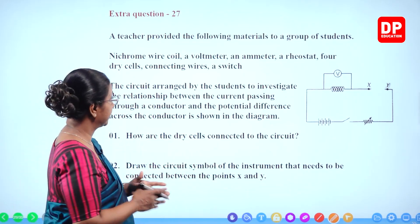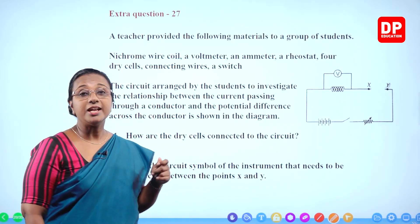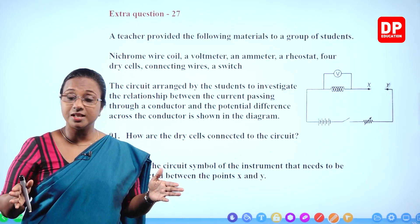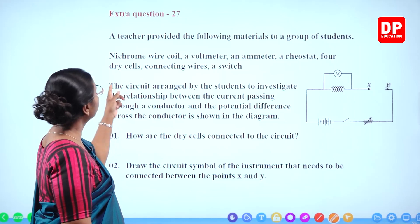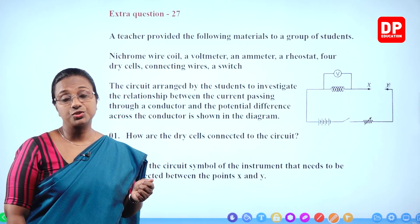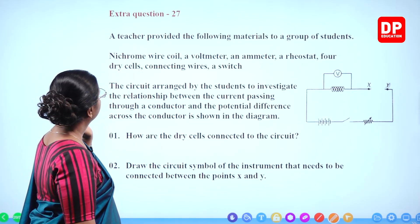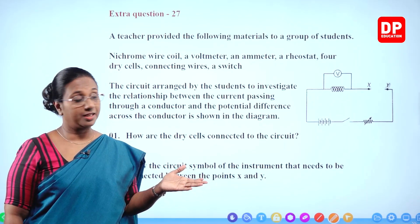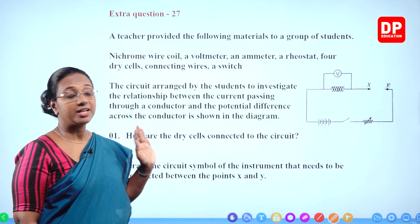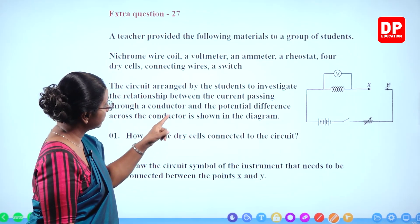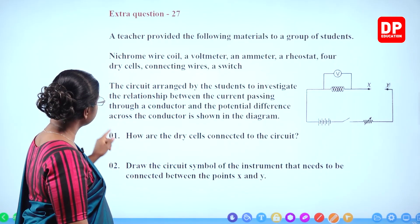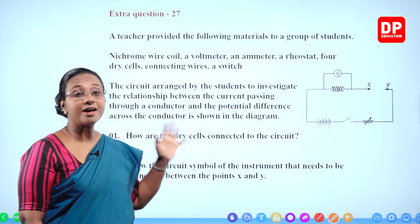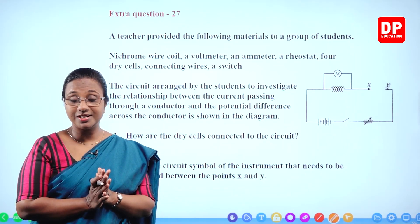The materials also include a voltmeter to measure the potential difference between two points, an ammeter to measure current, a rheostat which is a variable resistor (we can change the resistance during the activity), four dry cells as the power source providing the potential difference, connecting wires, and a switch. The circuit is arranged by students to investigate the relationship between the current passing through a conductor and the potential difference across it.